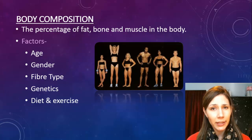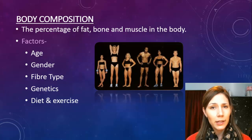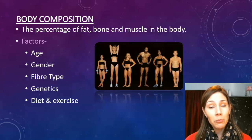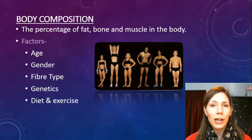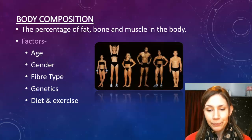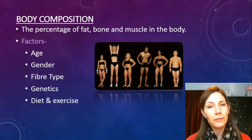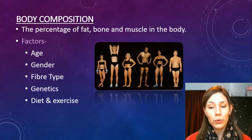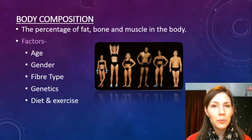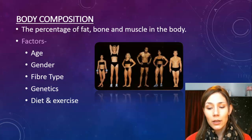Things that influence body composition include age — beyond 30 we find it easier to deposit fat. Gender also plays a role: women are more likely to deposit fat, whereas men are more likely to build muscle. Your diet and exercise habits matter too — a poor diet of fast food, high fats, and high sugars, combined with inactivity, means you're more likely to put on weight, placing you on the endomorphic end of the spectrum.